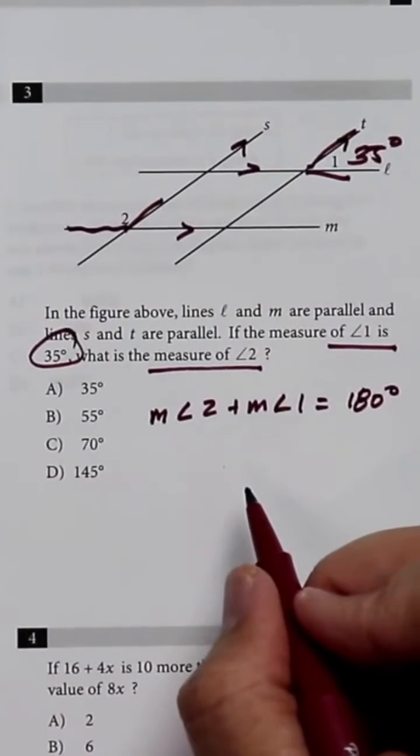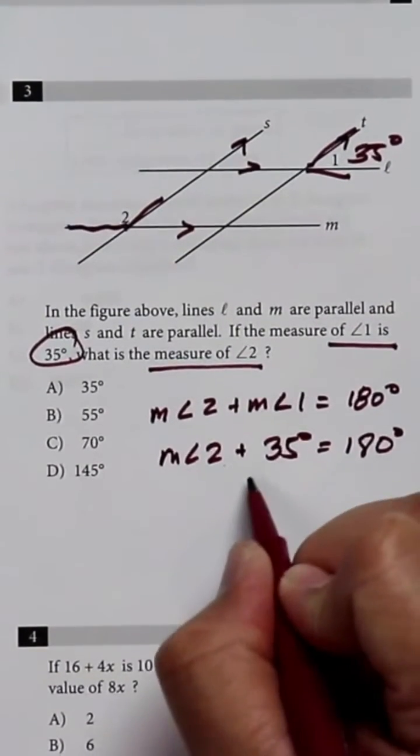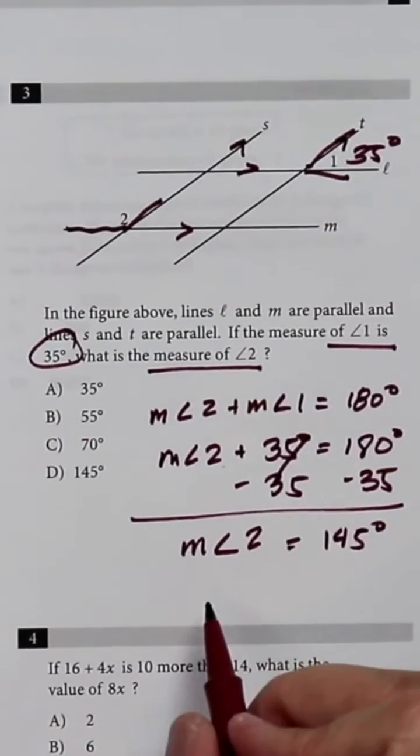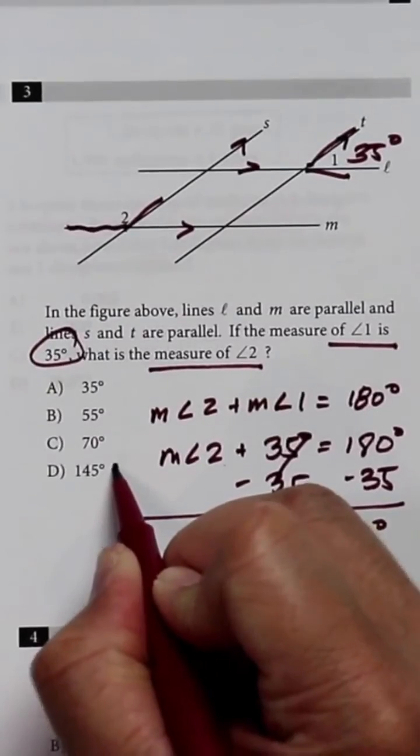We already know what angle 1 is, which is 35 degrees. So by solving the equation, the measurement of angle 2 is equal to 145 degrees, which is equal to the letter D.